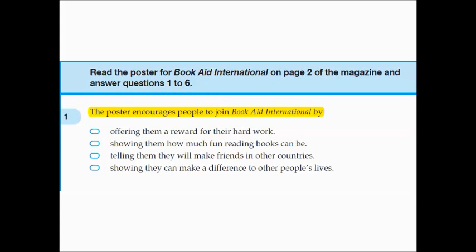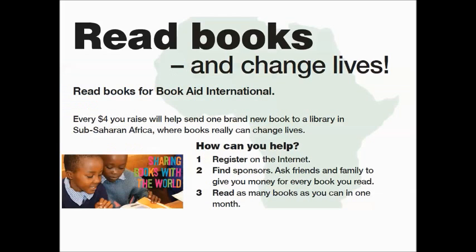Mr. Omara here and I want to give you a few quick tips for how you can approach some of the NAPLAN literacy questions. So in this question — this is an example of the test, obviously not the actual test — it says: the poster encourages people to join Book Aid International by, and it gives you four choices. What you need to do is go across to the magazine and find the article that it refers to.